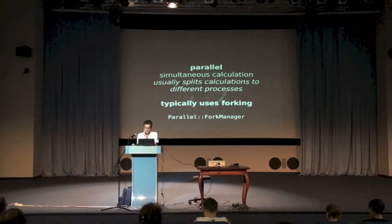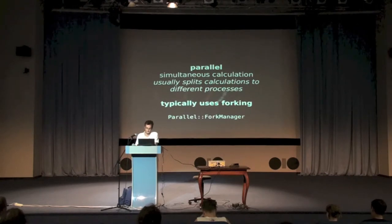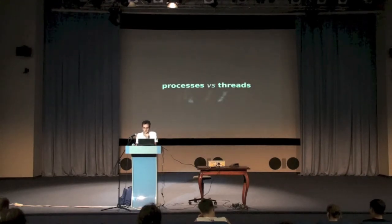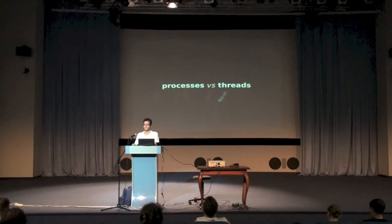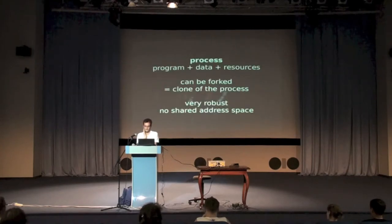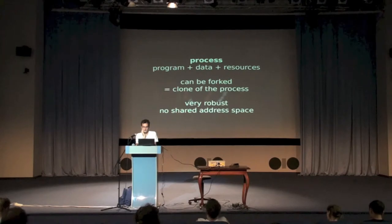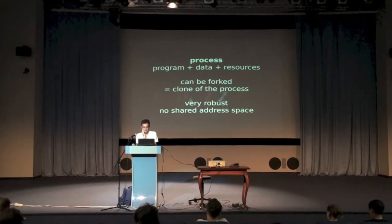We are talking about parallel computing on the same machine, and forking is one of the most basic concepts here. When talking about fork, I want to have a quick look at the difference between processes and threads. In Unix, a process is the program with its instructions, all the data in memory and the resources, which are typically memory addresses as well. This can be forked, which means you get a more or less exact clone of your process with its own address space and its own copy of the resources.